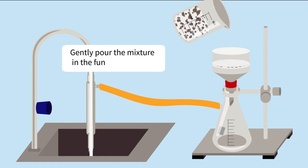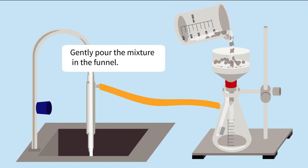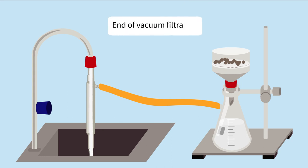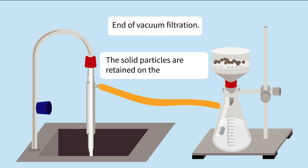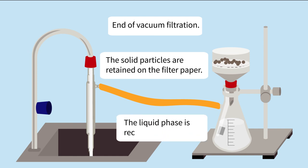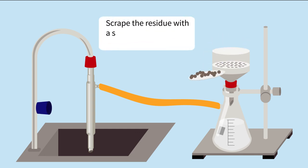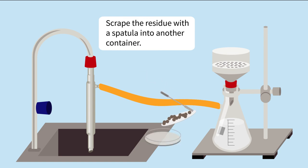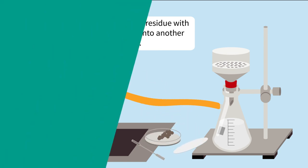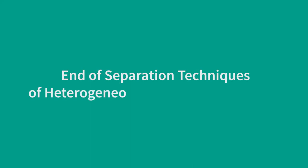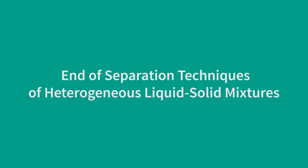Gently pour the mixture into the funnel. The solid particles are retained on the filter paper. The liquid phase — the filtrate — is recovered in the flask. Close the tap, then scrape the residue with a spatula into another container. End of separation techniques of heterogeneous liquid-solid mixtures.